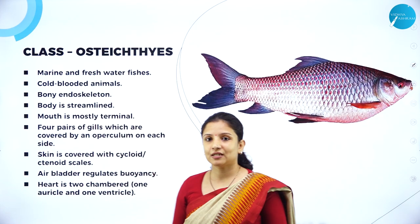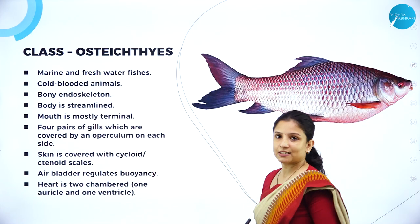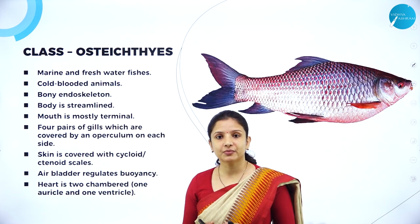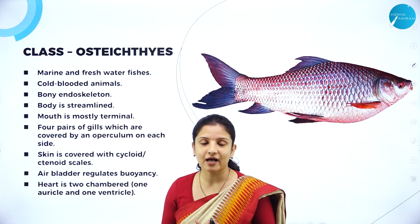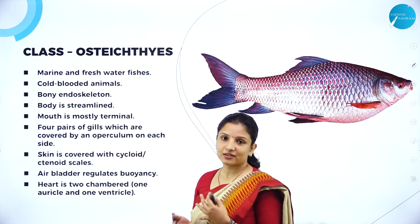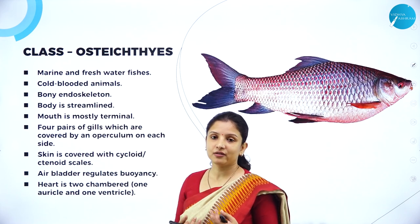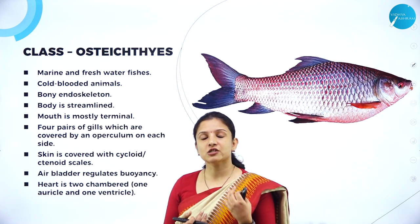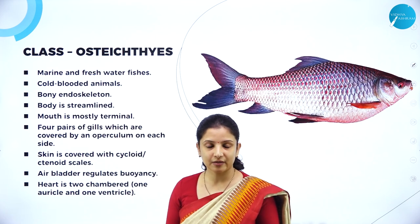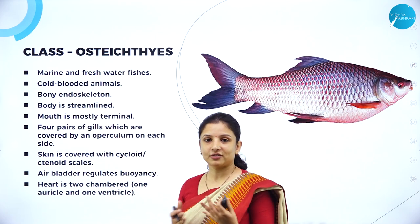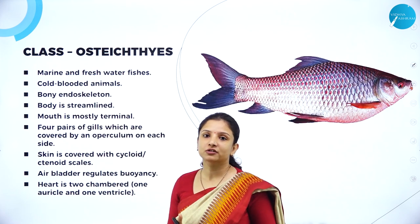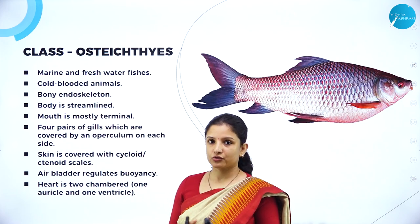All the fishes come under Osteichthyes. We learned in the previous session that sharks and hammerhead sharks come under Chondrichthyes. There is a difference between the type of scale, the arrangement of teeth, and the presence or absence of air bladder with respect to Chondrichthyes and Osteichthyes. Let's look at the characteristics of Osteichthyes.